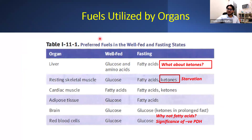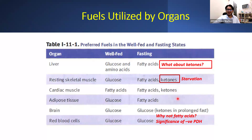These are the fuels utilized by different organs during fasting and well-fed states. The liver utilizes mainly glucose and amino acids during well-fed states, and fatty acids during fasting. Importantly, the liver does not utilize ketone bodies because hepatocytes lack the enzyme thiophorase, which is required for conversion of ketones to acetyl-CoA for energy as ATP. Skeletal muscles usually use glucose in well-fed states; they can use fatty acids and ketones during fasting. Cardiac muscle usually uses fatty acids and can switch to ketones. The brain almost always utilizes glucose — only in a prolonged fast can it utilize ketones, not fatty acids because they don't cross the blood-brain barrier. The significance of ketones for the brain: it saves glucose for the red blood cell, and it spares muscle wasting and protein breakdown. The red blood cells always utilize glucose because they don't have mitochondria.